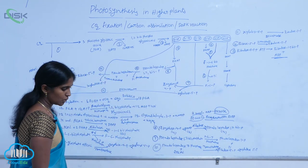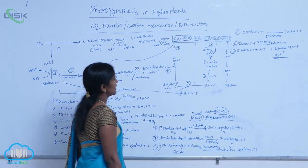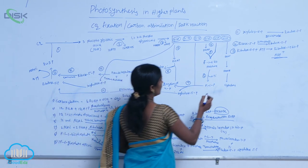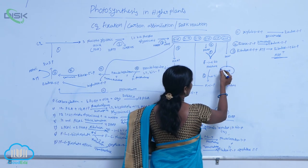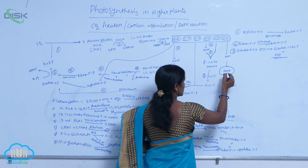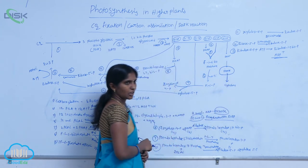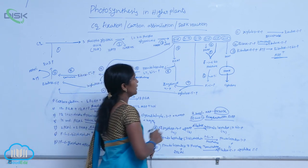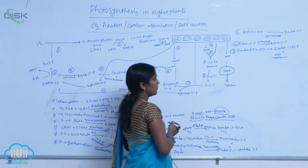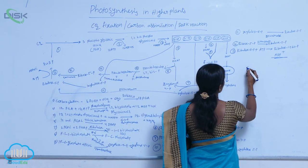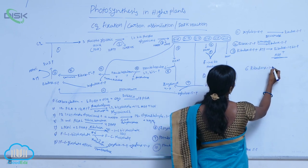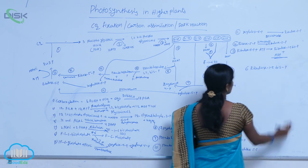Out of the 12 molecules of glyceraldehyde 3-phosphate, 2 molecules are used for the net production of glucose and other sugars, which then enter the cytoplasm. The remaining 10 glyceraldehyde 3-phosphates are used for the production of 6 molecules of ribulose 1,5-bisphosphate.